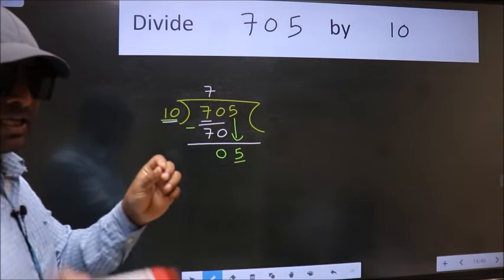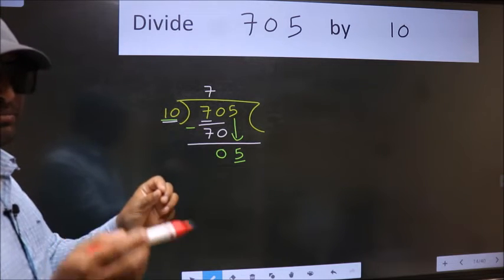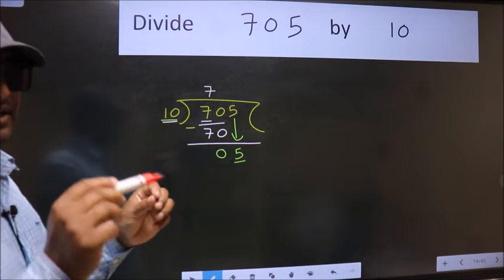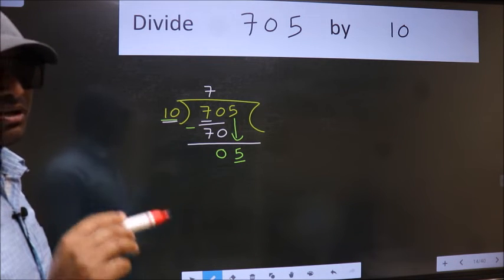Bring down the number and put dot take 0. Bring down the number and put dot take 0. Both at the same step. You should not do.